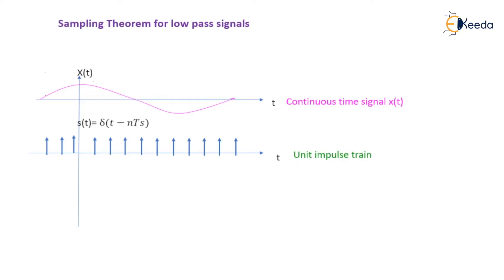It is indicated by s(t) = δ(t - nTs). We will try to sample down the continuous time signal by taking a sample at regular intervals with the help of the impulse train.